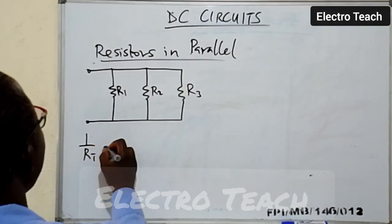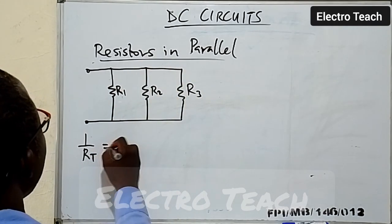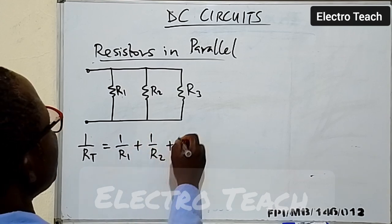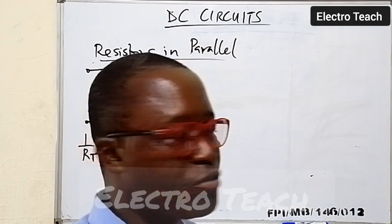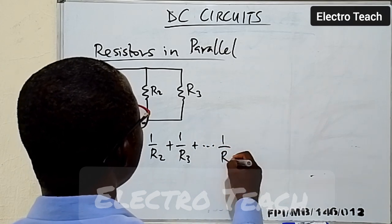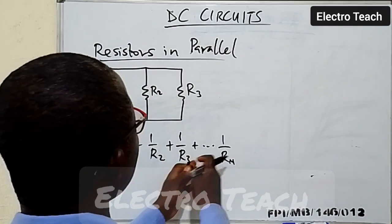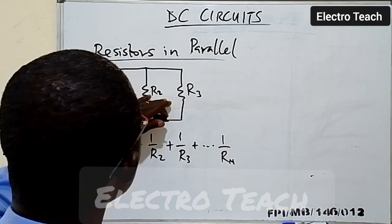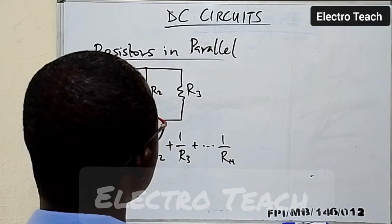The total equivalent resistance: one over R-total equals one over R1 plus one over R2 plus one over R3. Depending on how many resistors you have, you can continue adding terms: plus one over Rn, where n is the last one. So you can have two, three, four, and so on. When you have resistances connected in parallel, this is the applicable formula to determine the equivalent resistance.